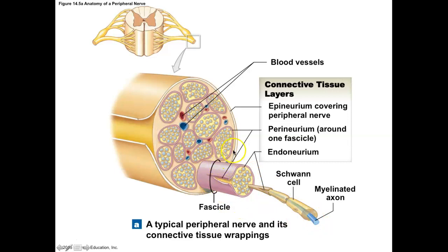The connective tissue that creates the fascicle is the perineurium. All the space filling in will be perineurium. We do have blood vessels in the nerve. And then epineurium is going to be the connective tissue on top — very, very identical to the muscle structure, really.